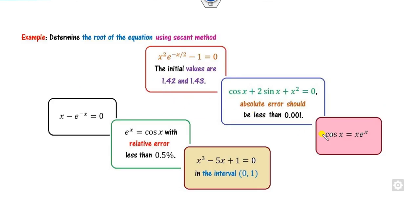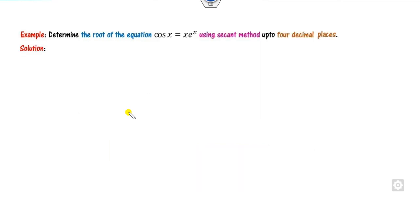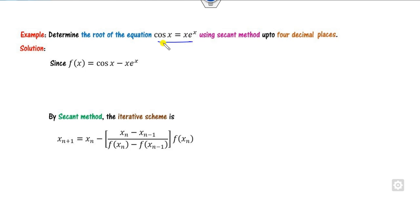In this lecture, we explain six examples of different categories: where initial points are given, where errors are given, where the relative error is given, where you have to find the interval A and B, and where nothing is given to you. For example, you may be told to find the roots up to four decimal places, with the given function F(x) and the secant method formula. Your target is to convert the process into a table, and for that you need two initial guesses.